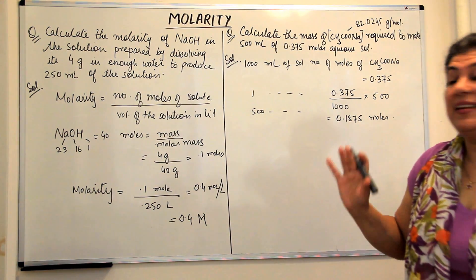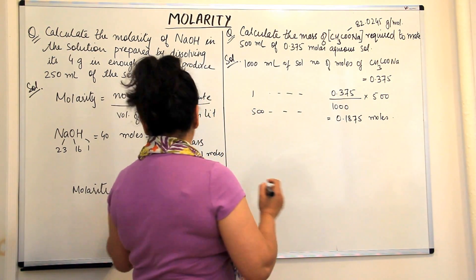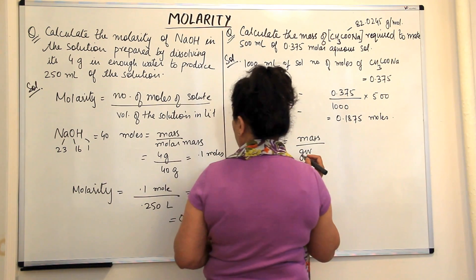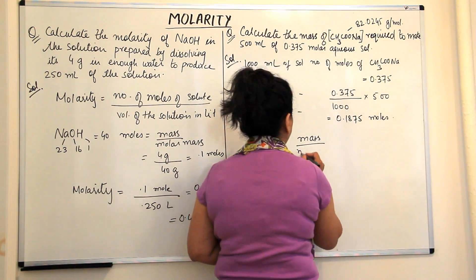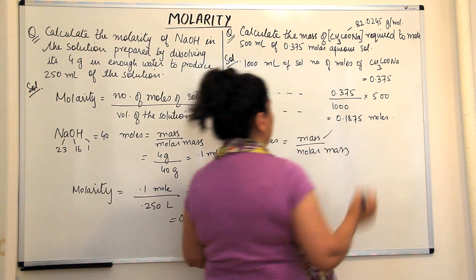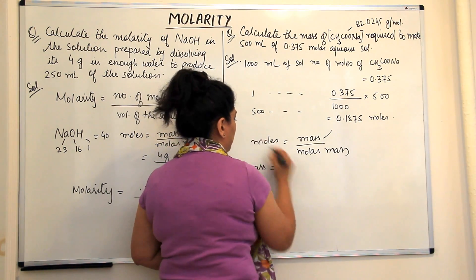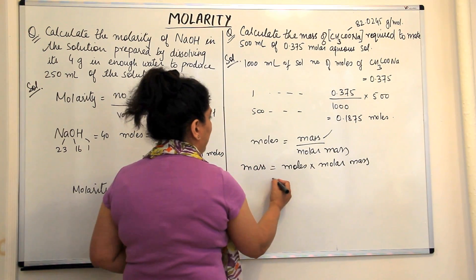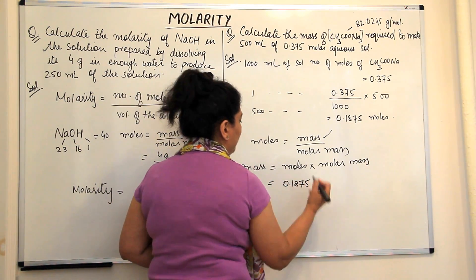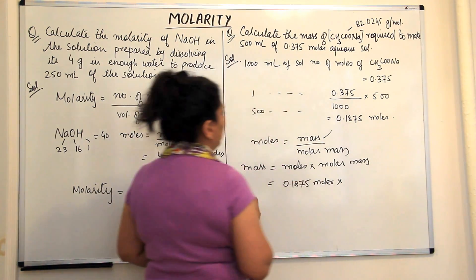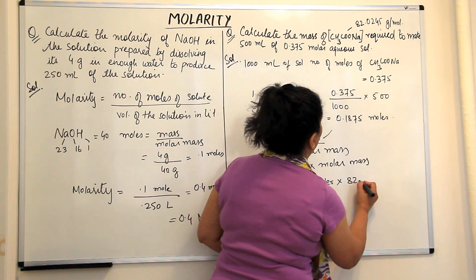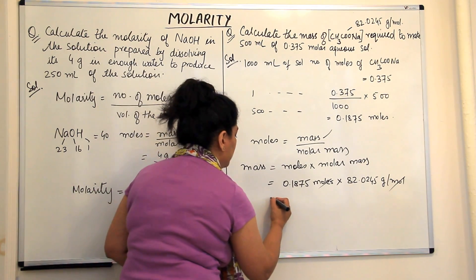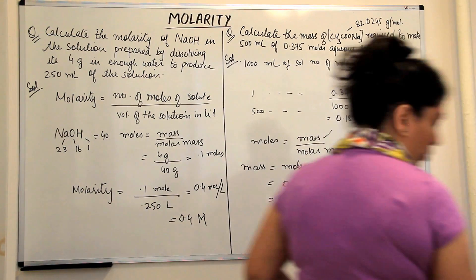We have 0.1875 moles of sodium acetate. Using the formula: mass = number of moles × molar mass. The number of moles is 0.1875 and the molar mass given is 82.0245 grams per mole. The moles cancel, giving the mass in grams: 0.1875 × 82.0245 = 15.38 grams.